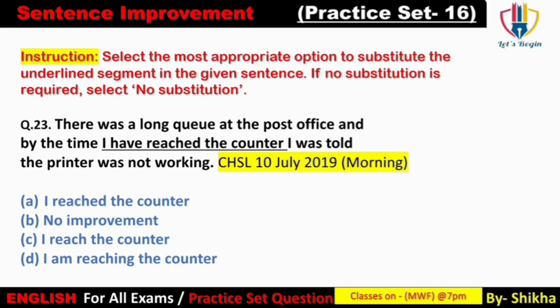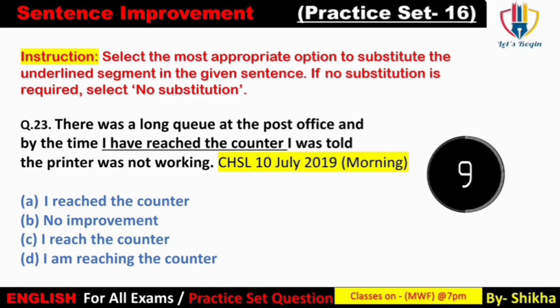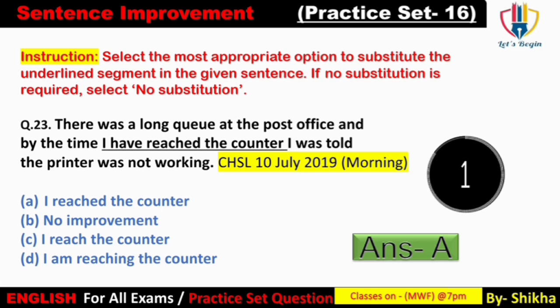Next: 'There was a long queue at the post office and by the time I have bridged the counter, I was told the printer was not working.' 'By the time I have bridged' — present form mein diya gaya hai, sentence galat ho jayega. Yahan past form ki zaroorat hai. Option A 'by the time I reached the counter' — matlab jis samay tak mein counter par pahunchi — yeh sahi hai. Option C 'I rich' — present form, galat. Option D continuous form 'I am bridging' — galat. Answer: option A — 'By the time I reached the counter.'